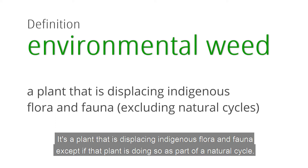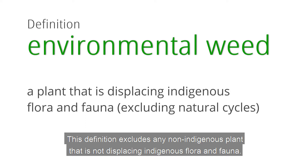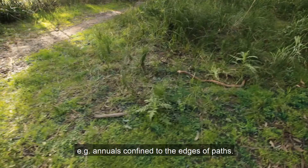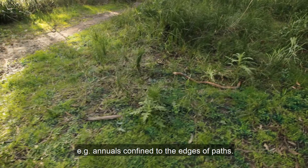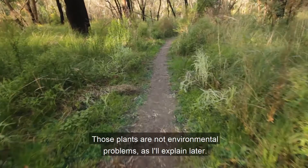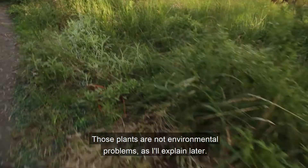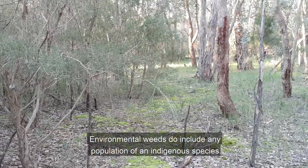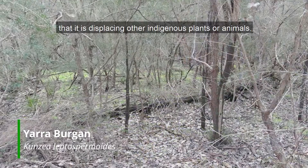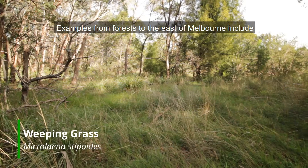Here's my carefully crafted definition of environmental weed. It's a plant that is displacing indigenous flora and fauna, except if that plant is displacing flora and fauna as part of a natural cycle. This definition excludes any non-indigenous plant that is not displacing indigenous flora and fauna — for example, plants confined to the edges of paths. Those plants are not environmental problems, as I'll explain later.